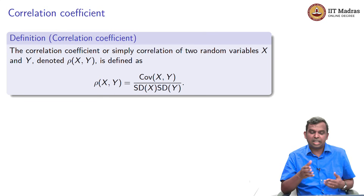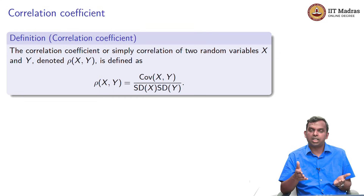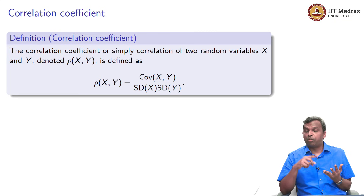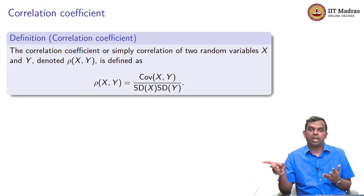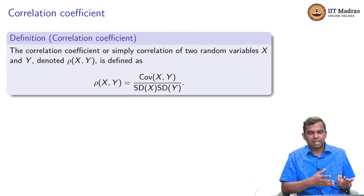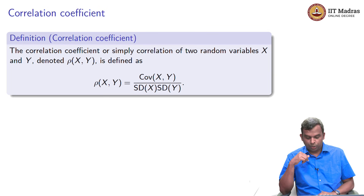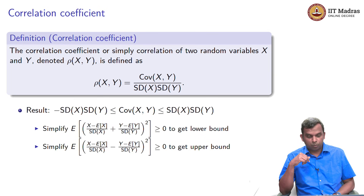Once again, we know how to calculate it. Given the joint distribution of x and y, we can find the variance of x and variance of y. From there, find the standard deviation of x and standard deviation of y, find the covariance of xy — we saw examples just now — and then divide and you get the answer.